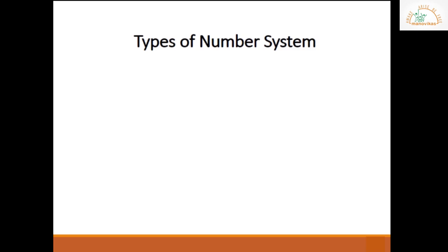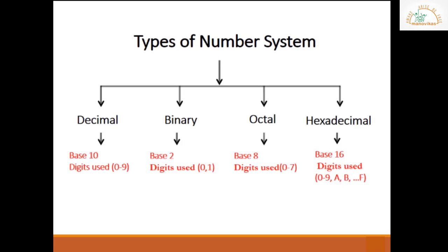Types of number system. There are four main types of number system: decimal, binary, octal, and hexadecimal.